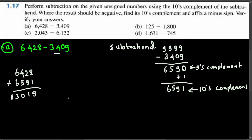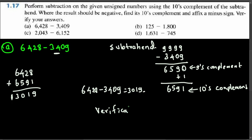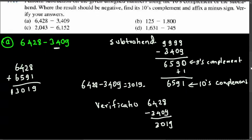If we do the subtraction directly — 6428 minus 3409 — we get 3019. So we got the exact same result. For verification, you can always do the direct subtraction: 6428 minus 3409 equals 3019. We verified it gives the exact same answer. The extra carry indicates a positive result; if there is no extra carry, that's a minus.